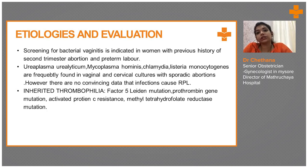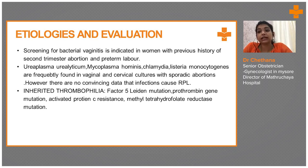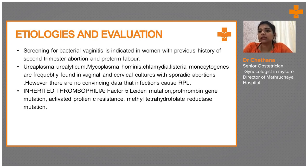Screening for bacterial vaginosis: bacterial infection in the vagina is also indicated in women with previous history of second trimester abortion or preterm labor. Ureaplasma urealyticum, Mycoplasma hominis, Chlamydia, and Listeria monocytogenes are organisms frequently found in vaginal and cervical cultures with sporadic abortions. However, there are no convincing data that infections are one of the main causes of RPL. Inherited thrombophilias like factor V Leiden mutation, prothrombin gene mutation, activated protein C resistance, and MTHFR mutation — all these are causes of thrombophilia which in turn leads to RPL.